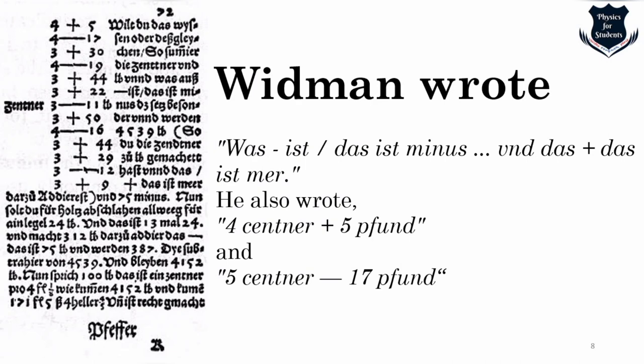The famous Swiss-American historian and mathematician Florian Cajori noted that there is clear evidence that Widman, as a lecturer at the University of Leipzig, had studied manuscripts in the Dresden library in which plus and minus signify operations, some of these having been written as early as 1486. Cajori, known for his famous book on the history of mathematical symbols, confirms that the plus and minus signs were in use by 1486.